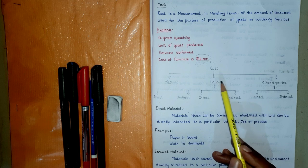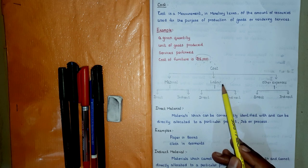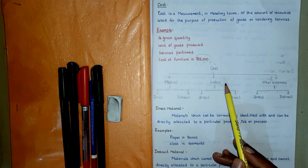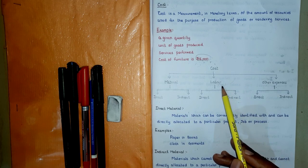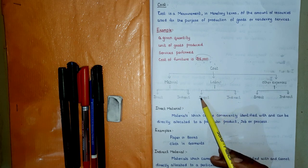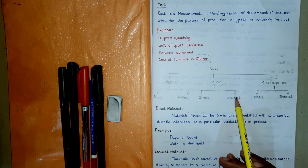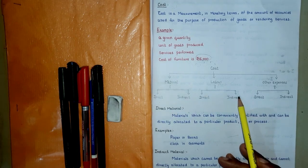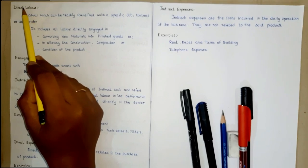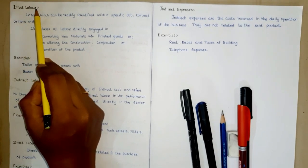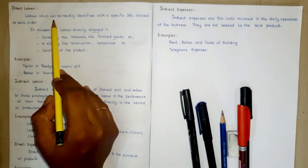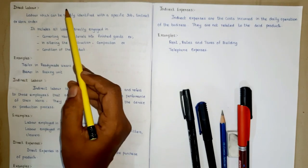Next element of cost is labor. Labor cost refers to the remuneration paid to the employees by the business in the form of wages, salary, bonus, allowances, etc. for their time and effort. They are usually split into direct and indirect labor cost based on the workers' contribution to the production process. Direct labor comprises work done on certain products or services.